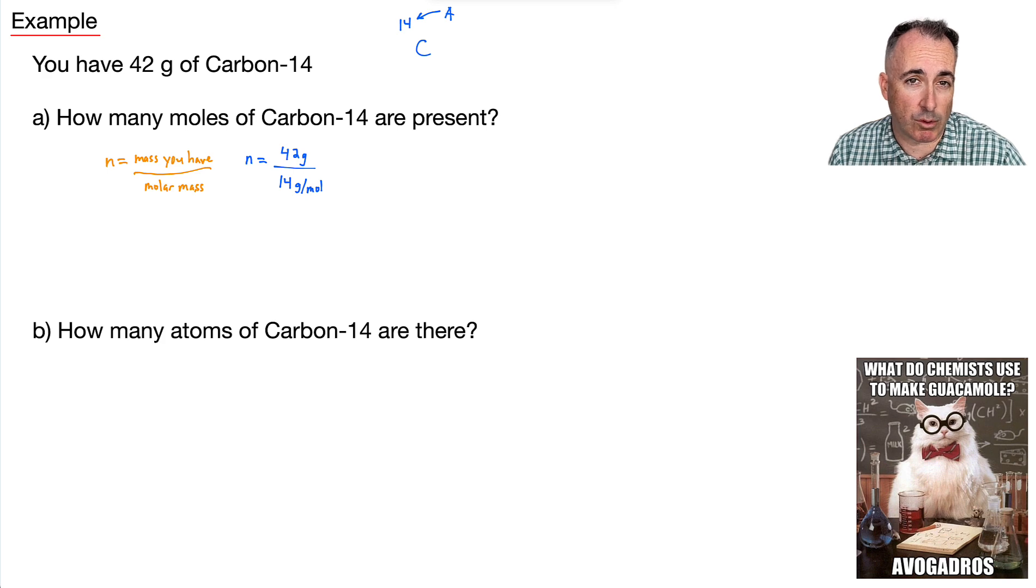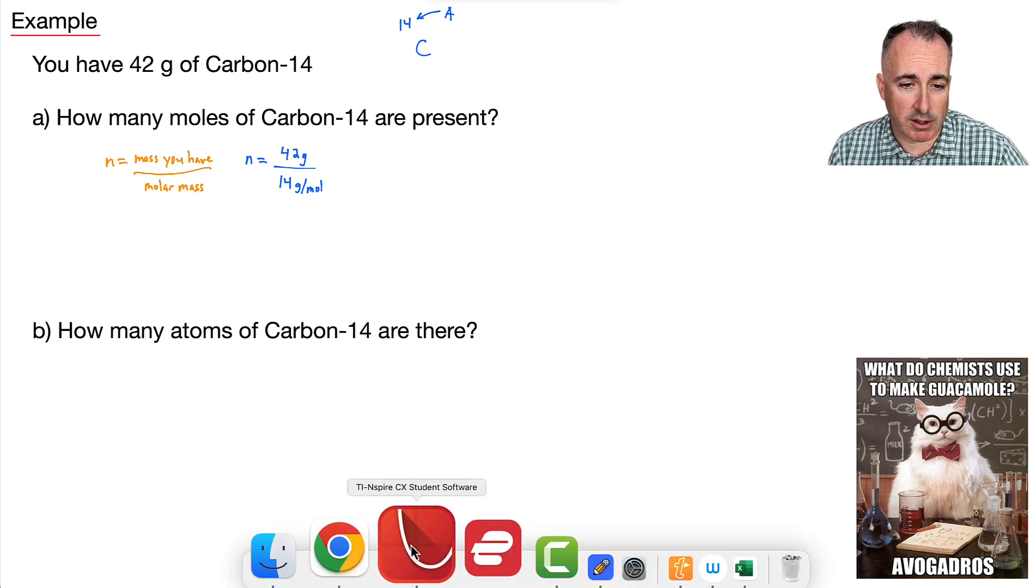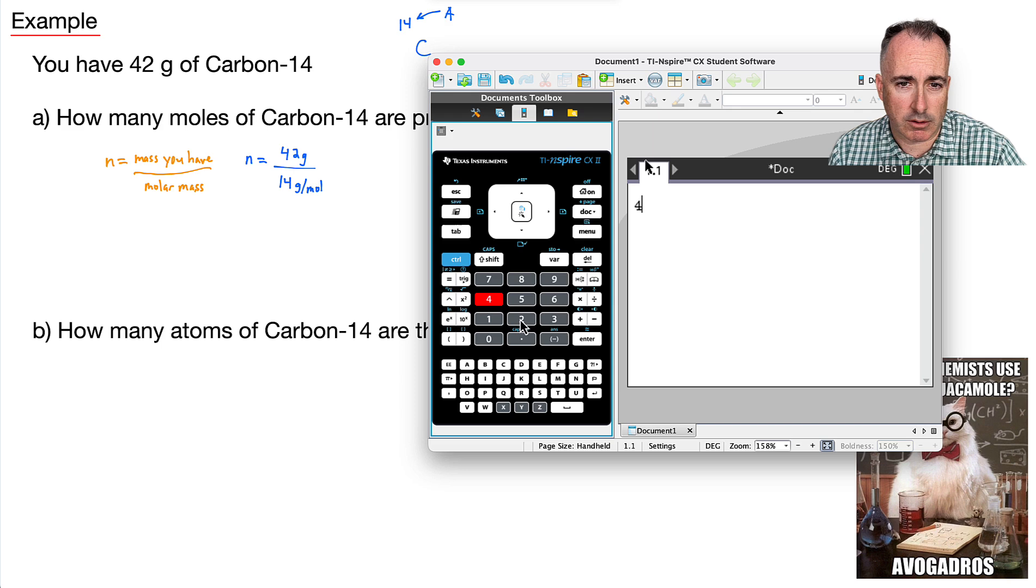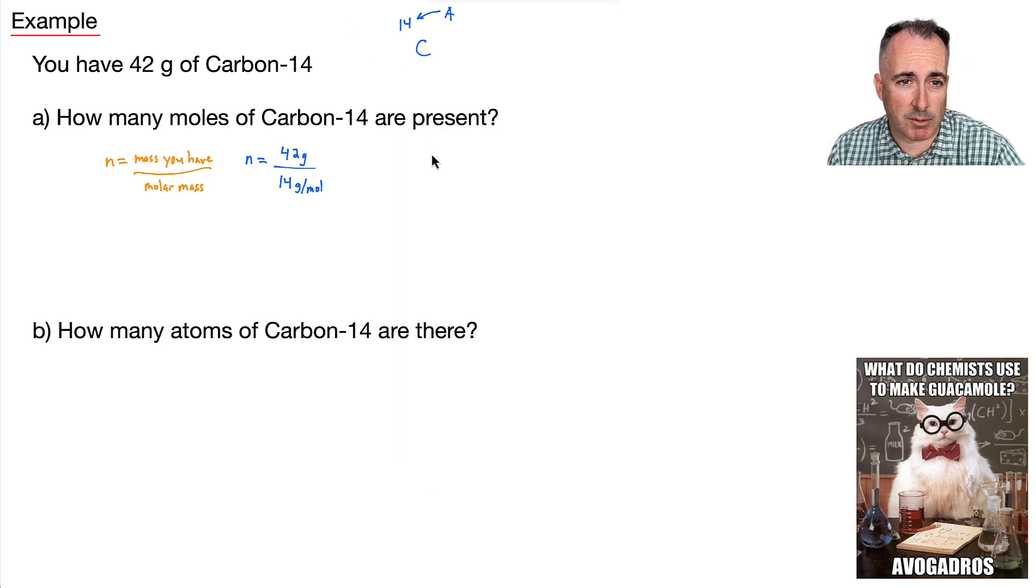Let's do that on our calculator. So I'll say it's 42 over 14. All right, well, that's going to give me 3. So that means I have n equals 3. So that means I have 3 moles.